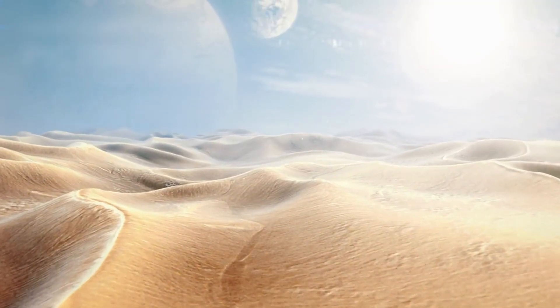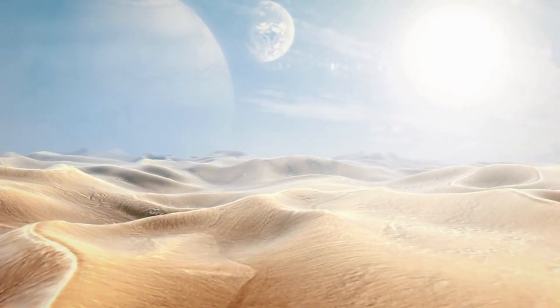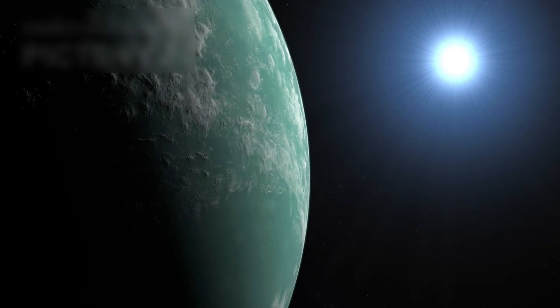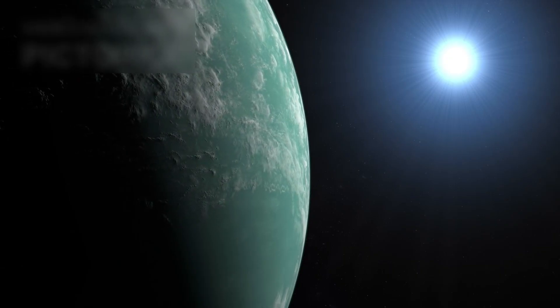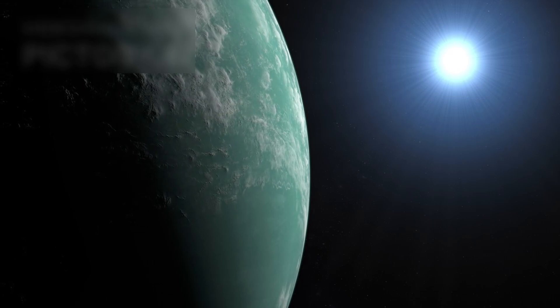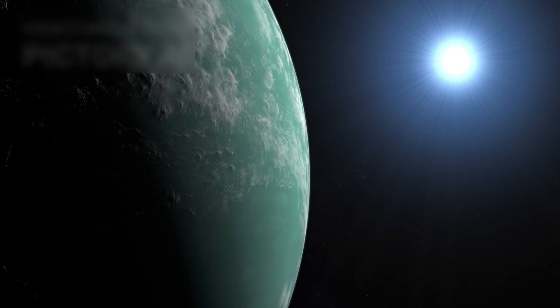The behavior of Proxima Centauri b's surface temperatures provides another fascinating aspect of this investigation. If the planet has no atmosphere, the temperature differences between its day and night sides would be extreme, scorching hot on one side and frigid cold on the other.